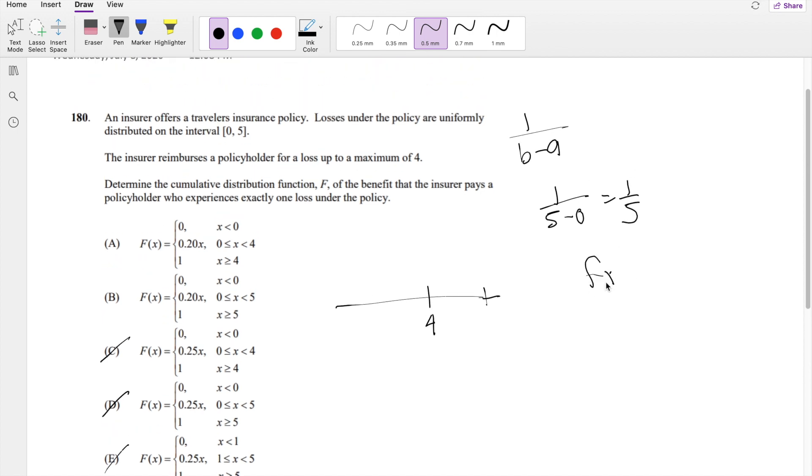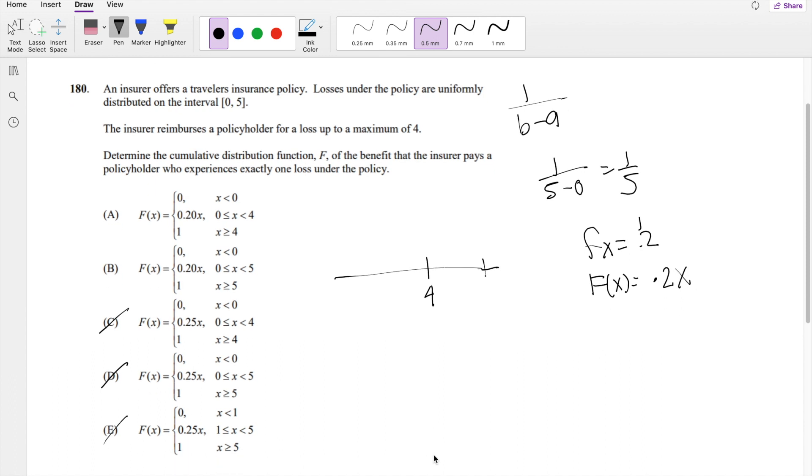So then f of x is equal to 0.2, right? That means the CDF of x would just have to be the anti-derivative of this, so you just have to add an x in there, 0.2x. And this is only true for x is between 0 and 4, because after 4,